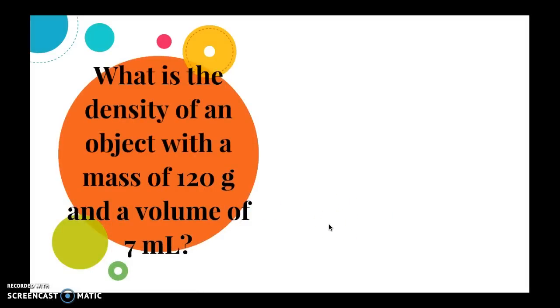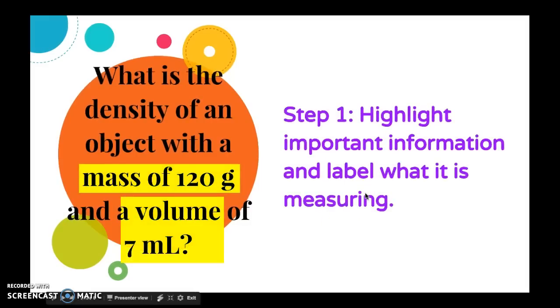So the first practice problem we're going to do says what is the density of an object with a mass of 120 grams and a volume of 7 milliliters. So the first step that we talked about was to highlight the important information that we're given and to label what exactly it's measuring. So I've highlighted mass of 120 grams and volume of 7 milliliters. It's also important to know what you're looking for. We're looking for the density in this case.